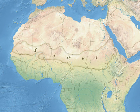In western Sahel, polygamy and child marriage are common. Female genital mutilation is also practiced across the Sahel.